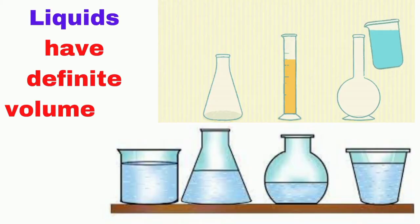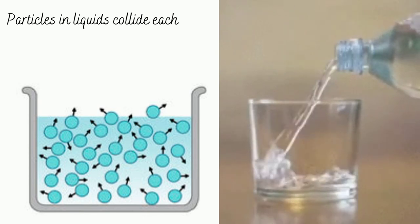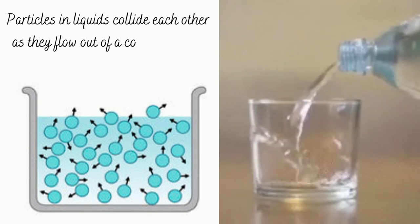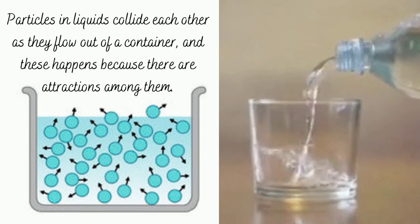Thus, liquids have definite volume but no definite shape. Particles in liquids collide with each other as they flow out of a container, and this happens because there are attractions among them. These attractions make it possible for liquids to have a definite volume.